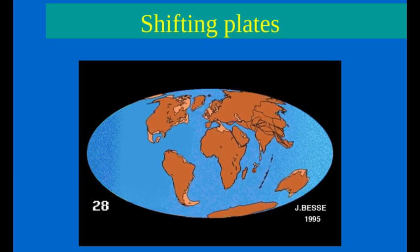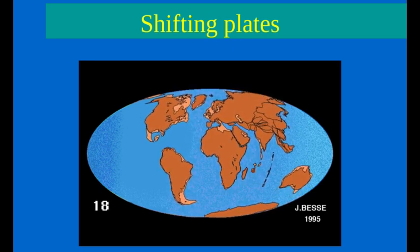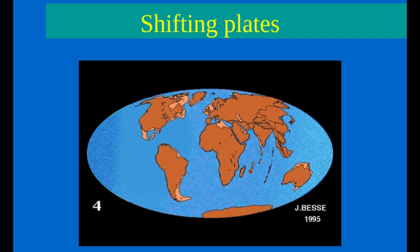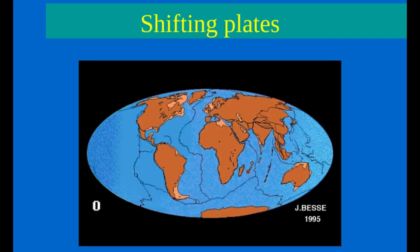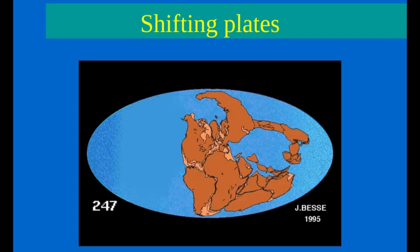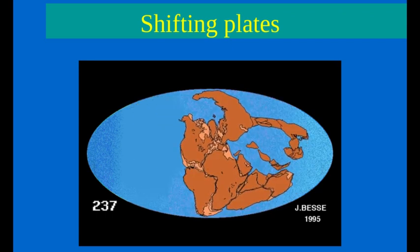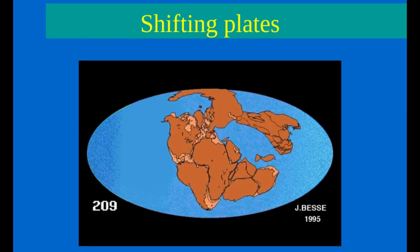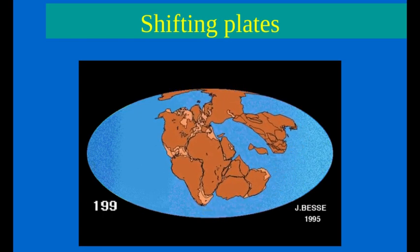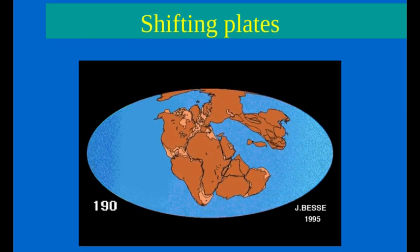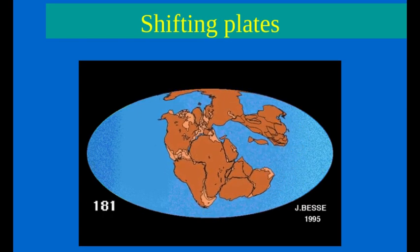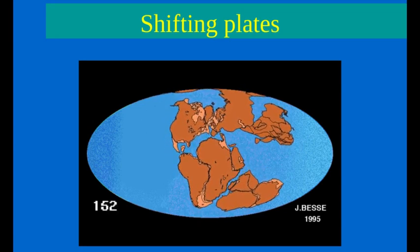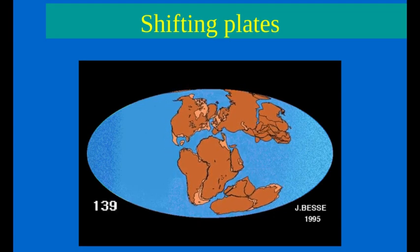225 million years ago, the continents were connected together as one large landmass. We refer to this continent as Pangaea. And over time, convection cells in the mantle tore sections of this supercontinent apart, resulting in 11 different tectonic plates.